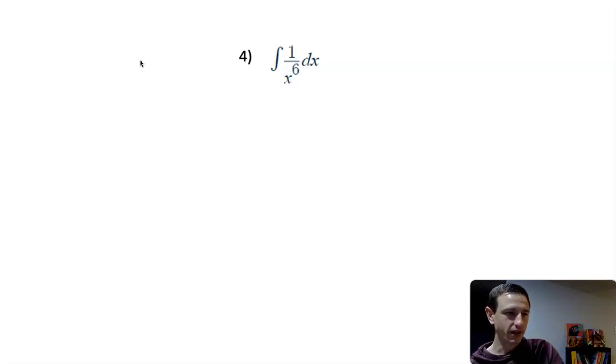Typically, we would see it as the integral of x to the 6th, and then you just use the power rule, add 1, and you're good. Just simplify if needed. But here, 1 over x to the 6th, how do I deal with that?